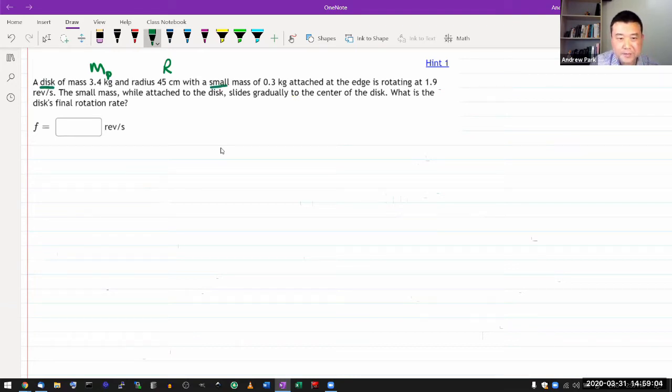It's going to be important that it's a small mass of 0.3 kilogram attached at the edge, rotating at some value of revolutions per second. So technically that's not angular velocity, that is frequency. Revolutions per second—one full circle per second, we are referring to frequency.